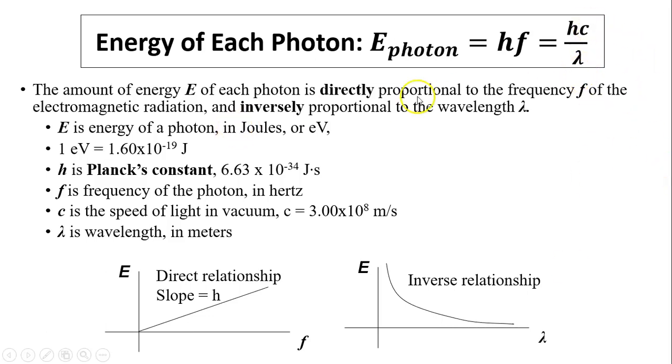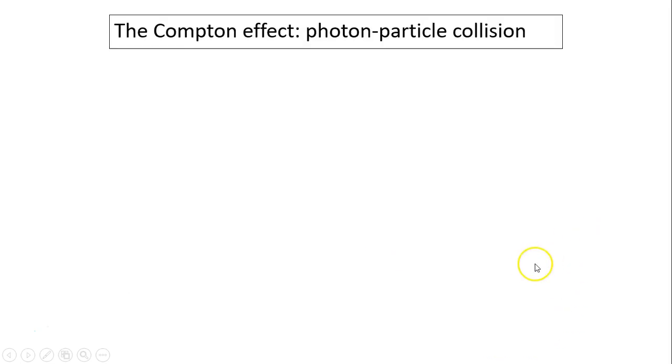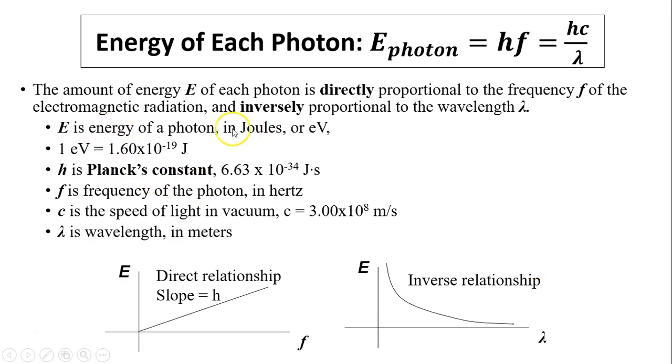Energy of each photon is h times f. Or, f equals c over lambda. So, E of photon equals hc over lambda also. The amount of energy of each photon is directly proportional to the frequency and inversely proportional to the wavelength. So, here is direct relationship. This slope is the Planck's constant. That is h, 6.63 times 10 to the negative 34. E and lambda has an inverse relationship. The longer the wavelength, the lower energy the photon has. Okay. By the way, E is the energy in photon. Remember, there are two units for energy. It can be in joules or in eV. So, in this equation, e-photon is in joules.